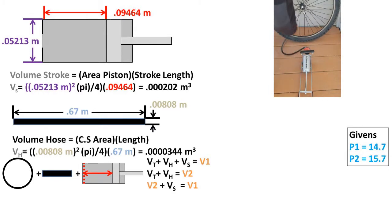Notice that the only difference between volume 1 and volume 2 is the volume of the stroke. So if we add volume of the stroke to volume 2, we get volume 1. This will be useful later on.